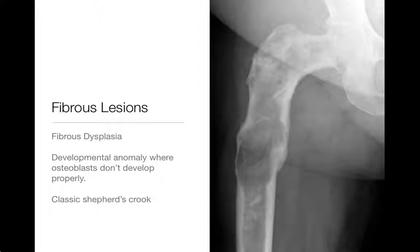Fibrous dysplasia is not really a bone tumor per se. It's more of a developmental anomaly. The osteoblasts in the bone don't quite develop properly, and you end up with this long area of abnormal bone. This typically occurs when it's monostatic as a long segment lesion in a long bone — that's the classic appearance of fibrous dysplasia, though it can look like many different things and can occur in all kinds of bones.